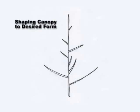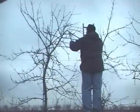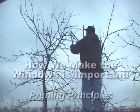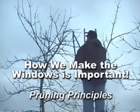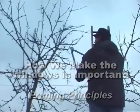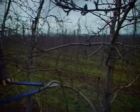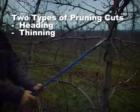A final goal of pruning and training apple trees is to shape the canopy to the desired tree form. In apple orchards, trees are trained to a conical or pyramid shape in most training systems. How we make the windows into a fruit tree is important. It's essential to understand when to use various pruning and training strategies. There are two types of pruning cuts: heading and thinning.